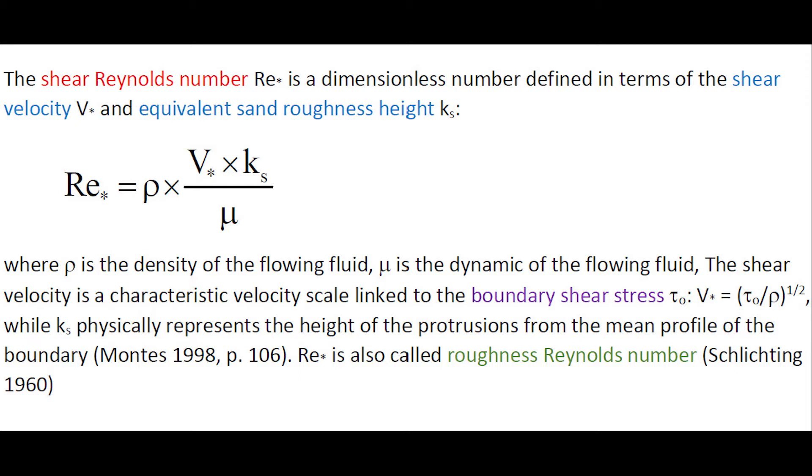The roughness height, ks, physically represents the height of the protrusion from the mean profile of the boundary.